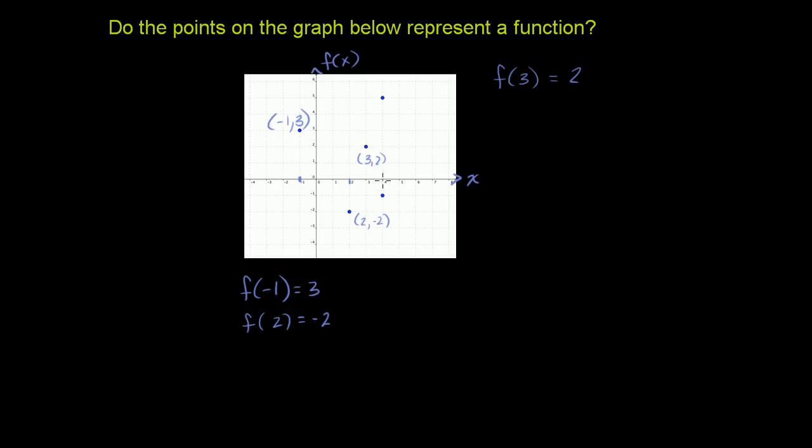Now, what about when we input 4 into the function? Let me do this in magenta. So what happens if I input 4 into my function? Well, according to these points, there are two points that relate to 4, that 4 can be mapped to. I could map it to the point (4, 5).